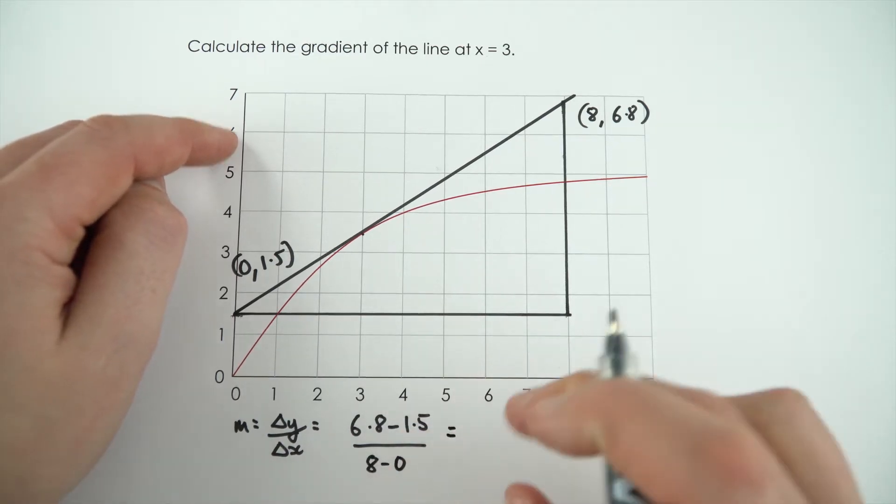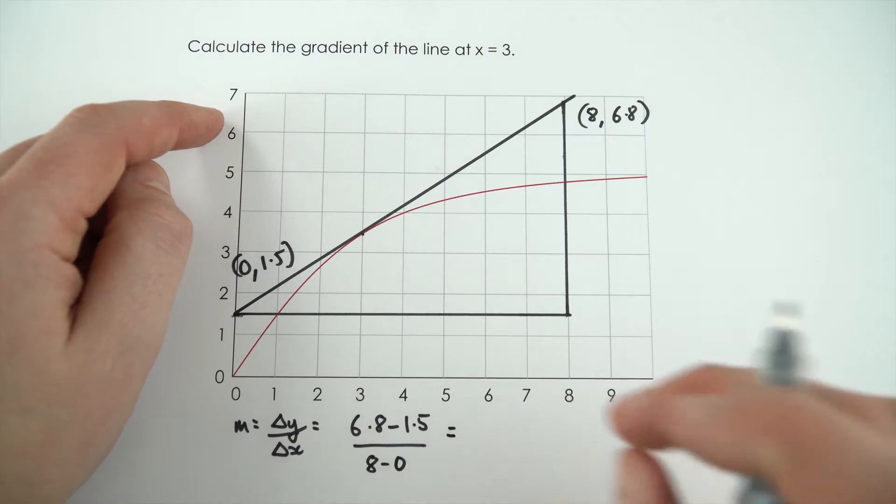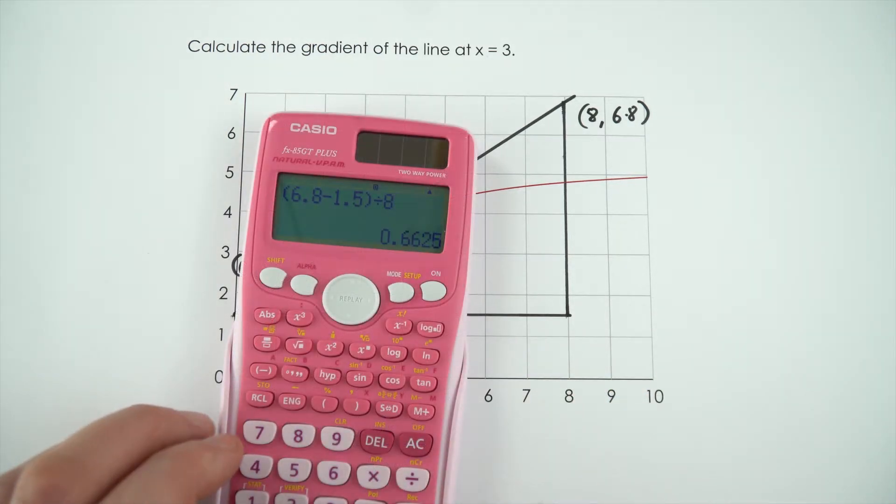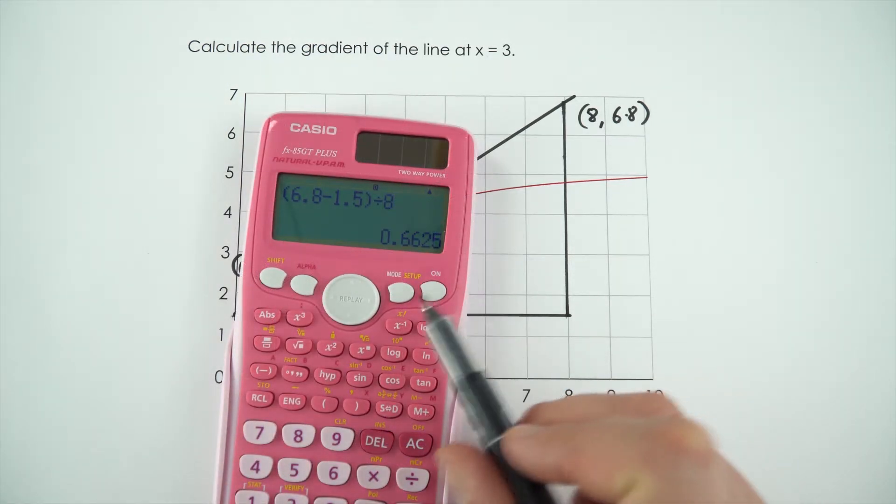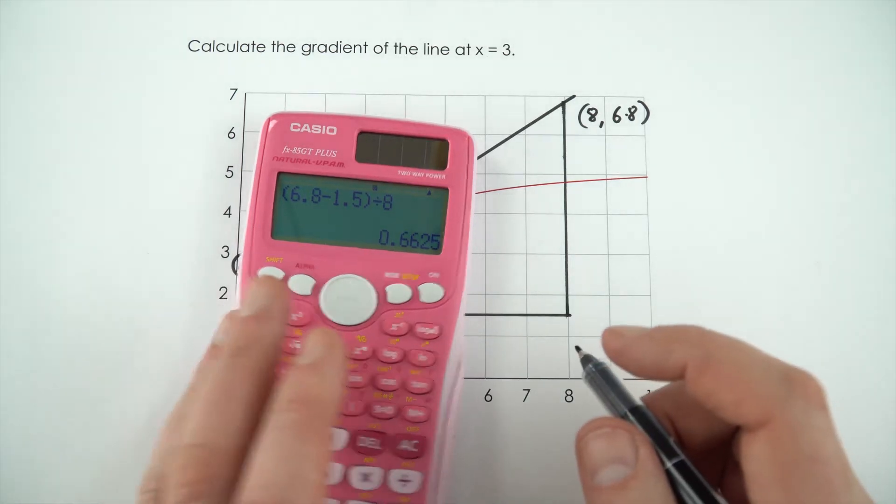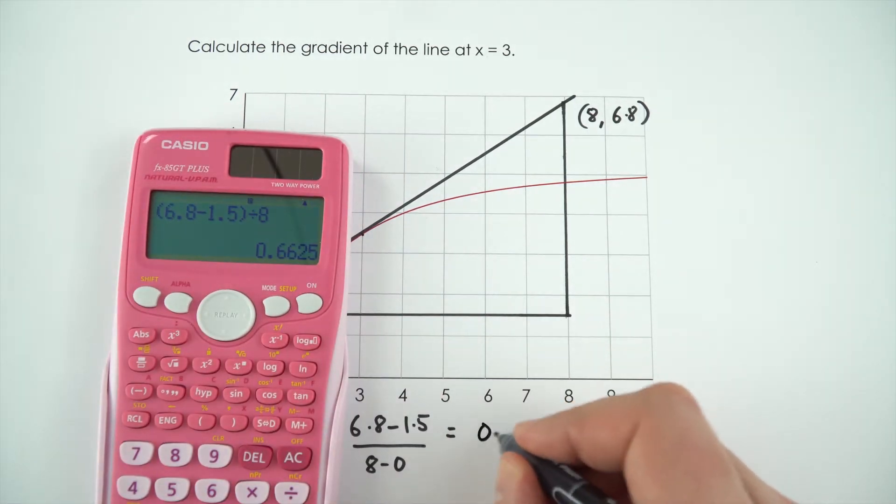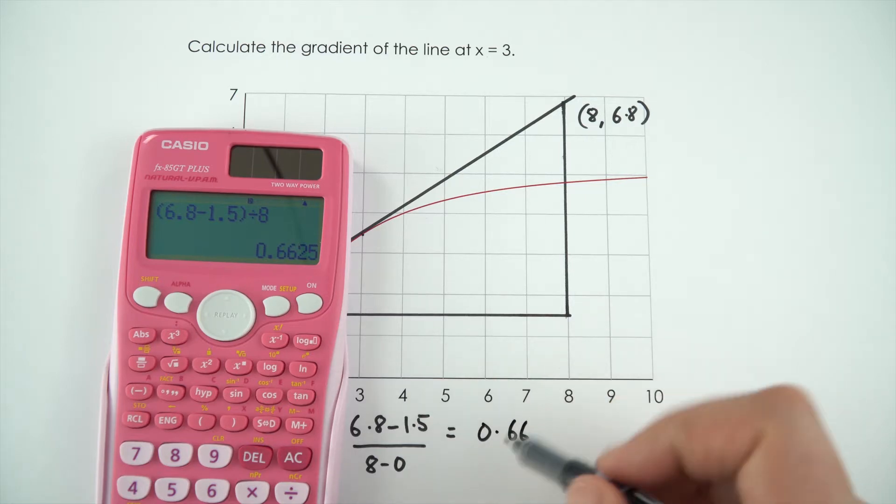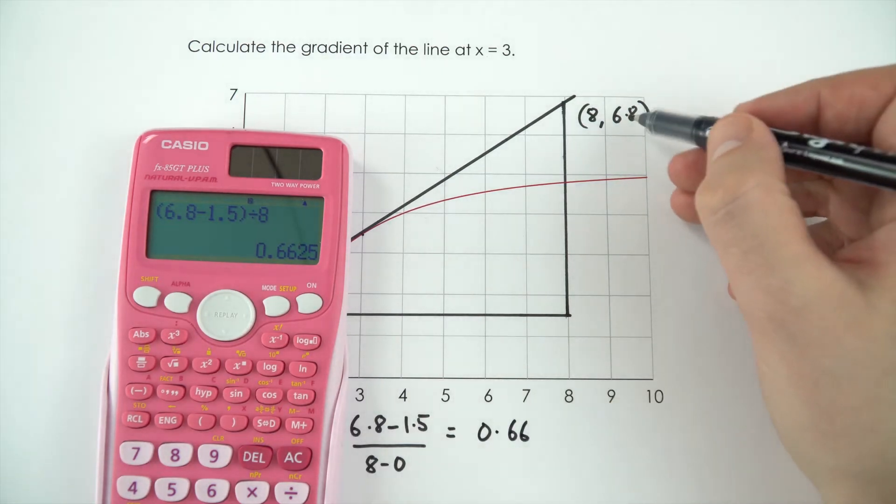And I'm just going to put these numbers into my calculator to work out the final gradient. This gives a value of 0.6625, and I'm just going to give this as 0.66. I suppose that value there is as precise as I'm going to get.